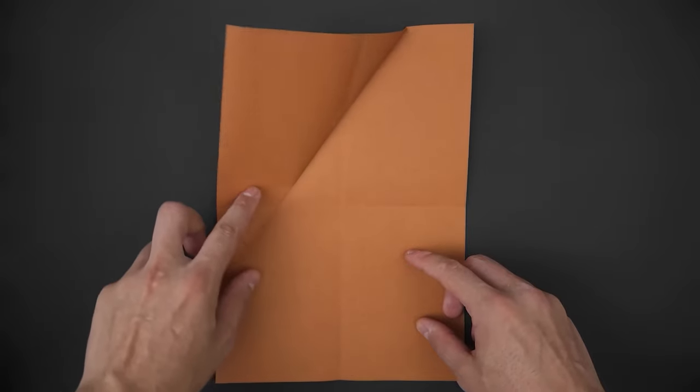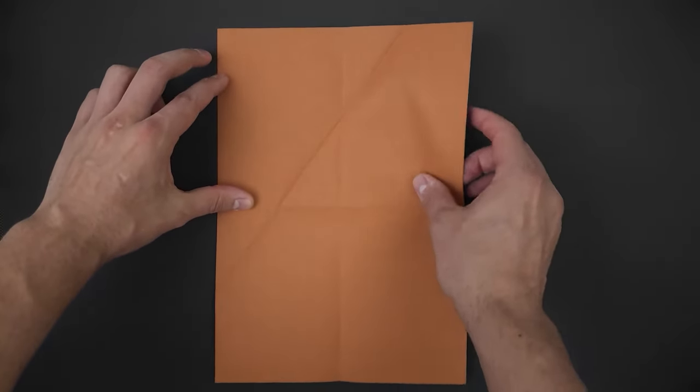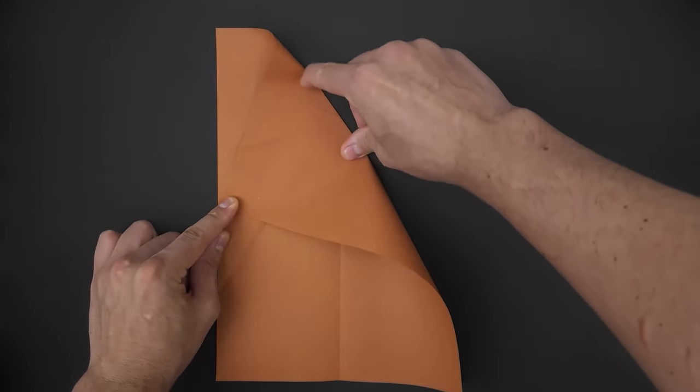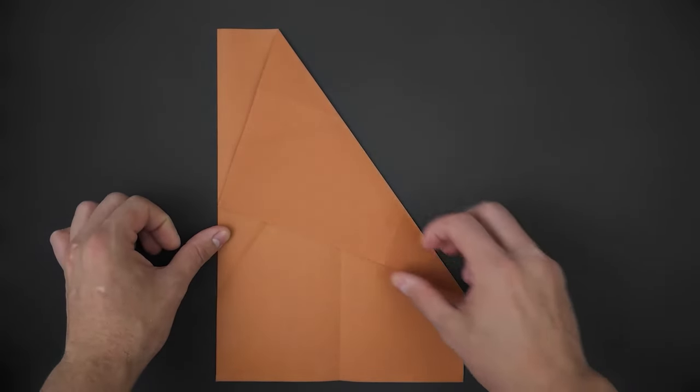Unfold this part and repeat the same step with the other side. As before, bring the corner to the end of the horizontal line and reinforce. Unfold this one as well.